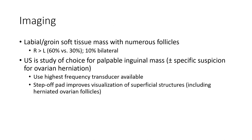On imaging, the inguinal region shows a soft tissue mass with numerous follicles. Distribution is approximately 60% unilateral right, 30% unilateral left, and 10% bilateral.